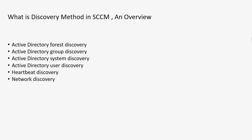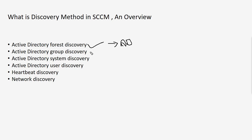There are six kinds of discovery methods in SCCM. The first is Active Directory Forest Discovery. This discovery is applied on the Active Directory forest, meaning the entire Active Directory forest will be discovered and visible in your SCCM console.